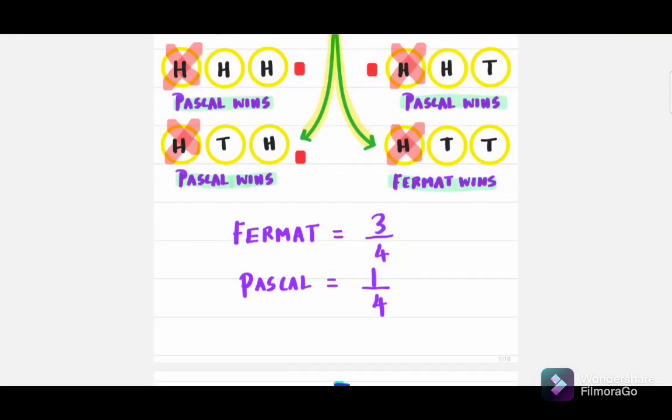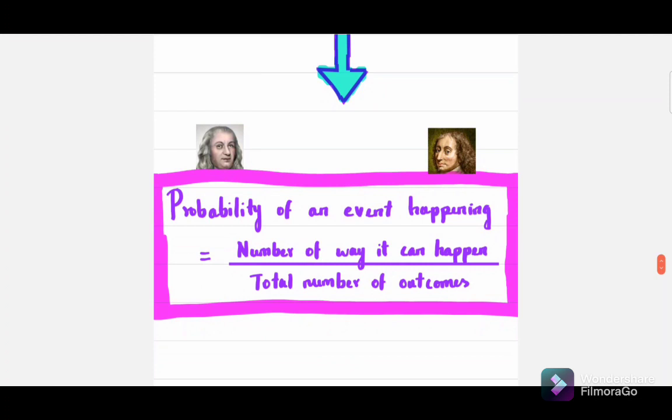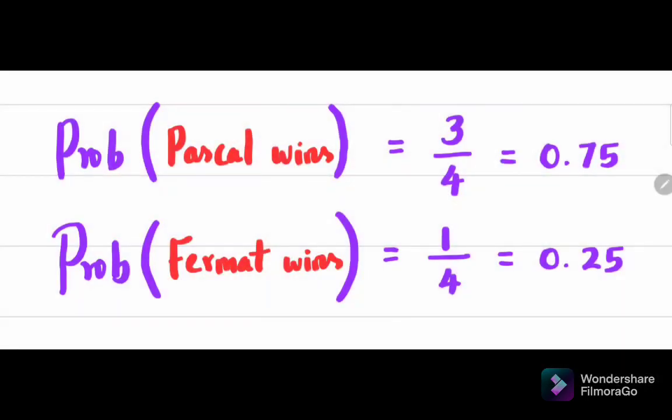From this, Pascal and Fermat discovered the very first important equation of probability: If an experiment has multiple possible outcomes which are equally likely, then the probability of an event happening equals the number of ways it can happen over the total number of outcomes. In our example, probability of Pascal winning equals 3/4, that is 0.75, and the probability of Fermat winning equals 1/4, which means 0.25.